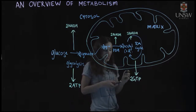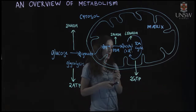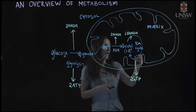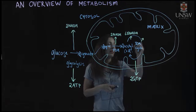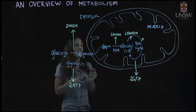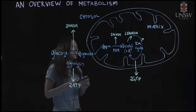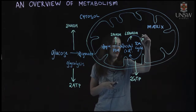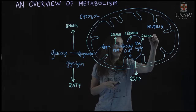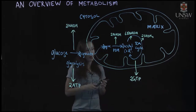Since the TCA cycle occurs twice per glucose, we actually end up with six NADH being produced. We also have an FADH2 being produced per cycle — FADH2 is an electron carrier, so electrons are transferred to FAD+ to give us FADH2. There are two FADH2 total because we have two cycles from the oxidation of glucose.